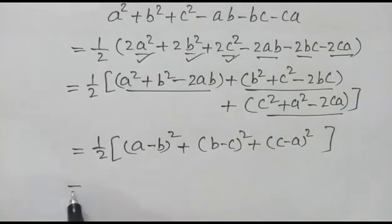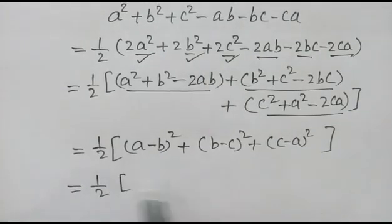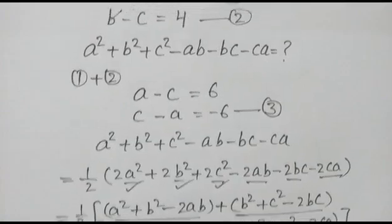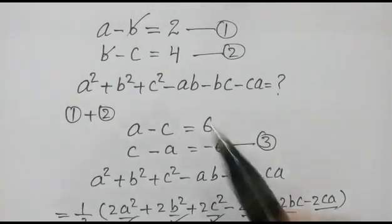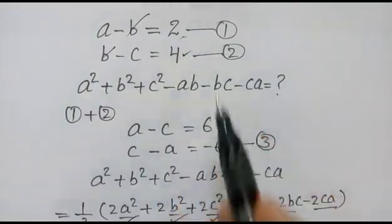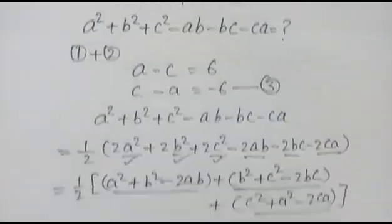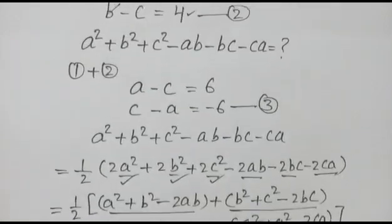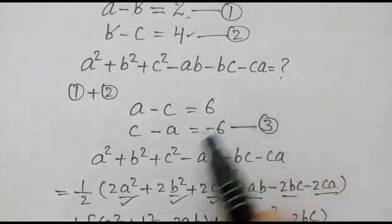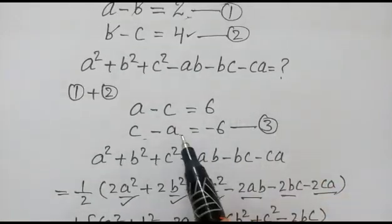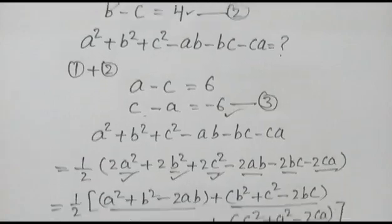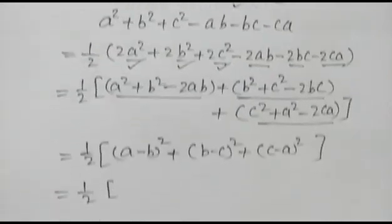So we have half of: (a minus b) is 2, so squared is 4; (b minus c) is 4, so squared is 16; and (c minus a) is 6, so squared is 36.